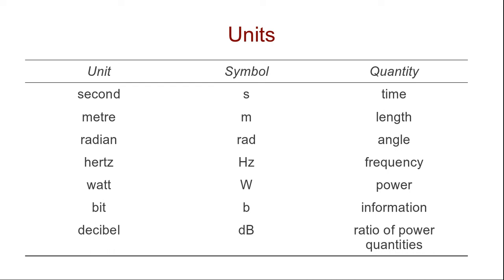For example, when we are measuring time we use seconds, and the lowercase s is the symbol used for seconds. Length is measured in meters. Angle is measured in radians or even in degrees.